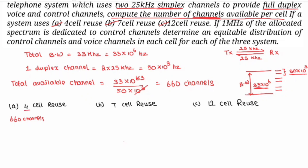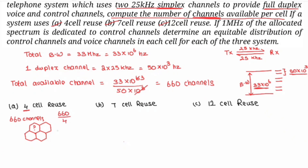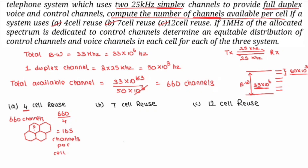For 4-cell reuse: 660 divided by 4 equals 165 channels per cell. So each cell gets 165 channels. For 7-cell reuse: 660 divided by 7 equals 94.2, which we approximate to 95 channels per cell.